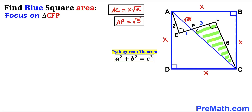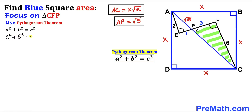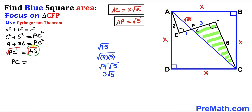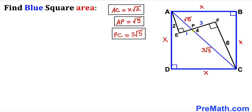Now applying the Pythagorean theorem to right triangle CFP to find PC, with legs PF = 3 and FC = 6: 3² + 6² = PC², giving 9 + 36 = 45 = PC². Taking the square root and simplifying, PC = √45 = 3√5.